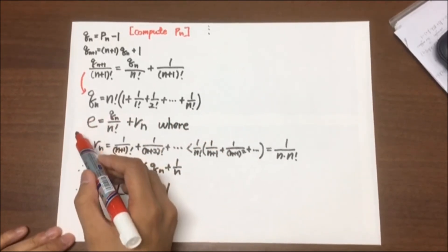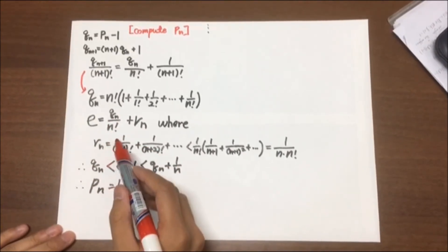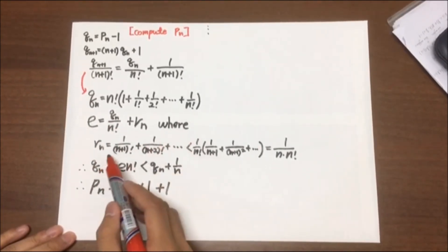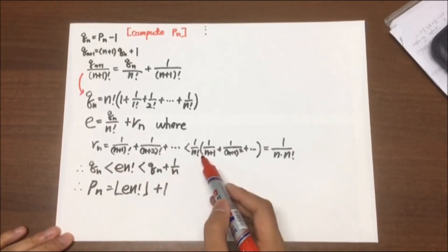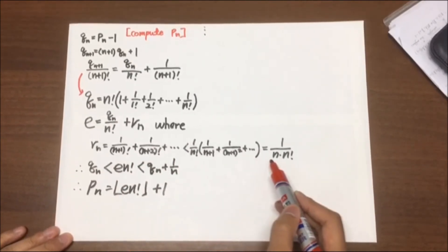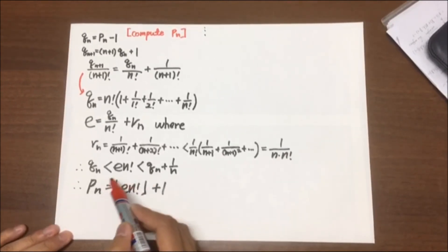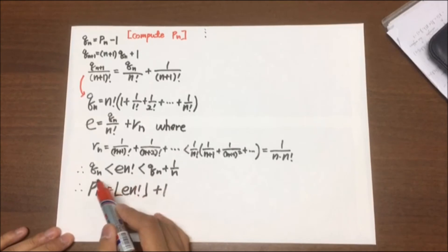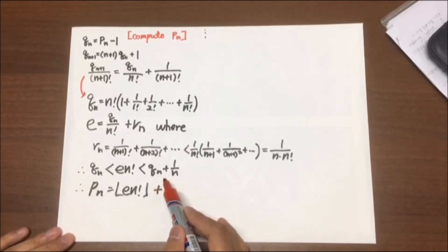And since Euler number e is equal to Q_N over N factorial plus R_N, where R_N is the remainder. And since this remainder is less than or equal to this formula, which is equal to 1 over N times N factorial, e times N factorial is greater than Q_N and is less than Q_N plus 1 over N.